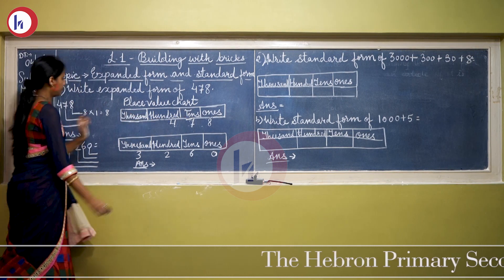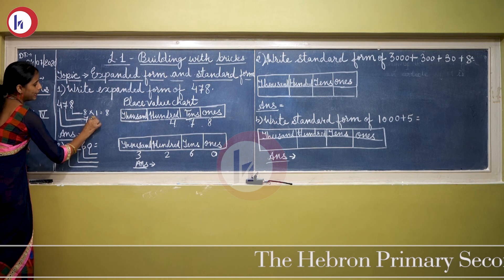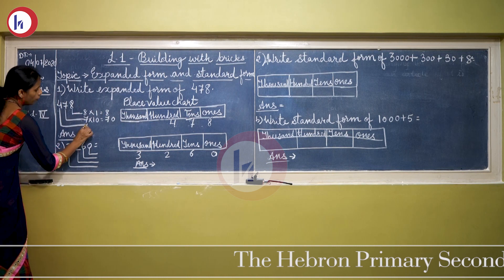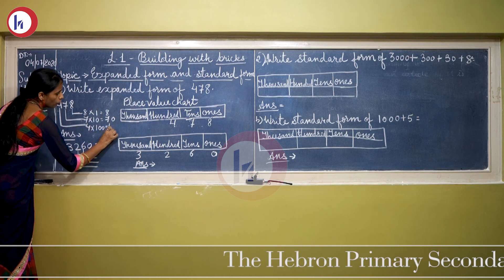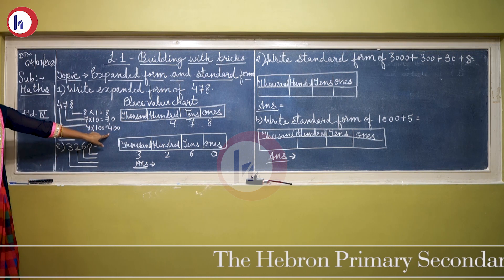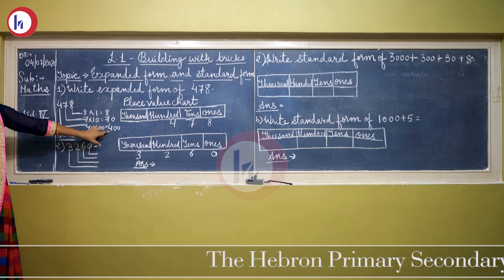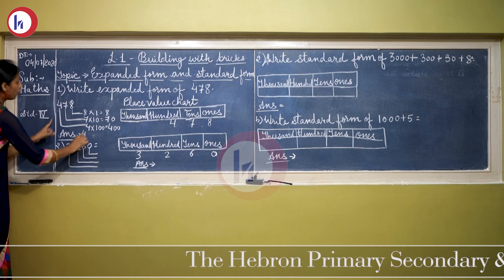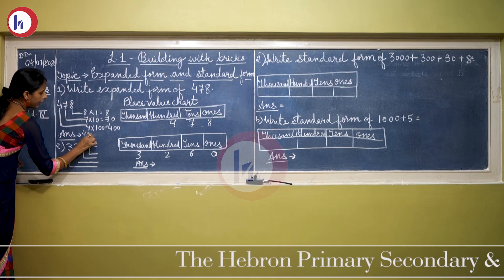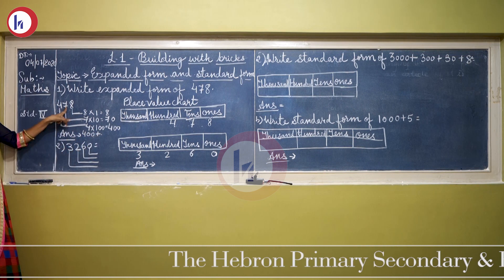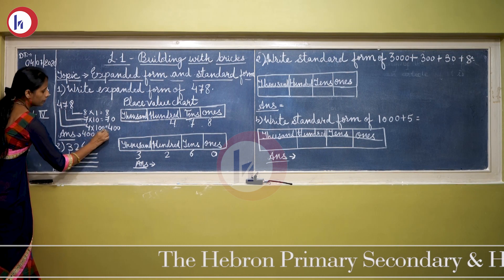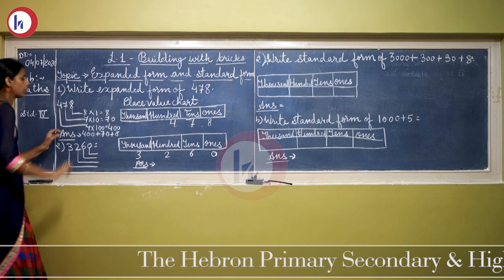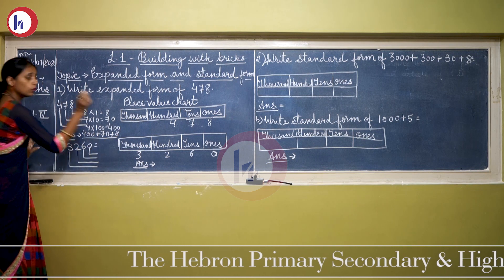7 is on the tens place, so 7 multiplied by 10 equals 70. 4 is on the hundreds place, so 4 multiplied by 100 equals 400. Now we have all the place values. The last step is to write the expanded form. Starting from 4, the place value of 4 is 400, plus the place value of 7 which is 70, plus 8, whose place value is 8. So the expanded form is 400 + 70 + 8.